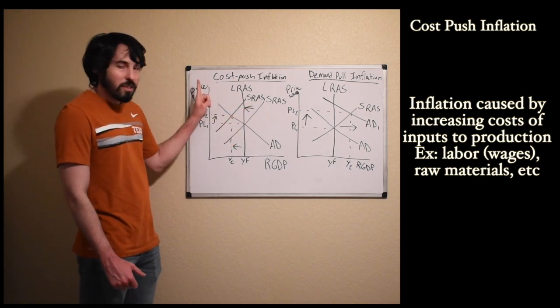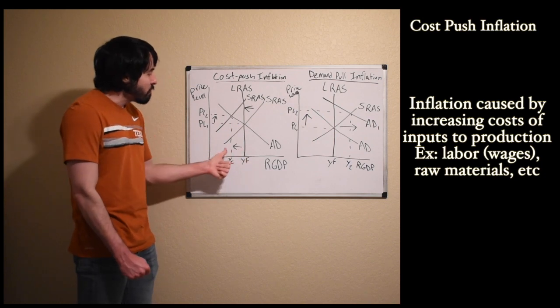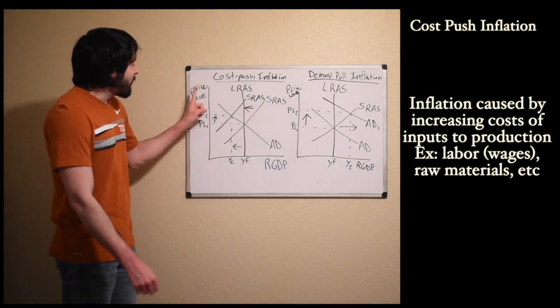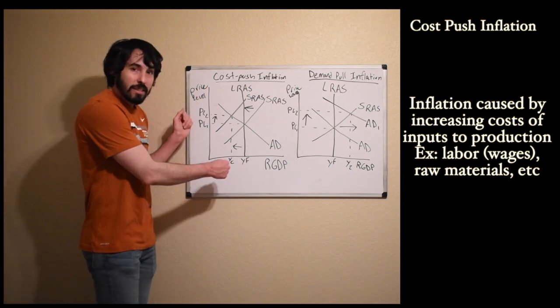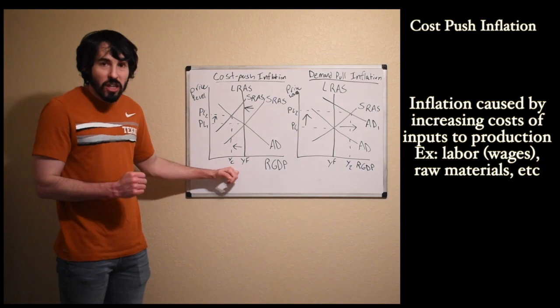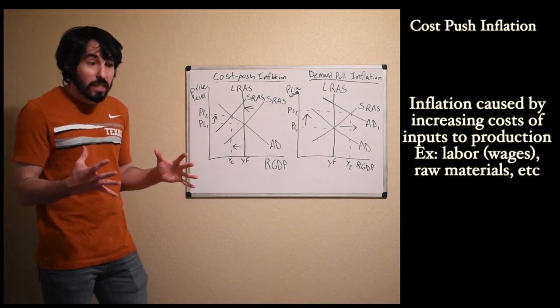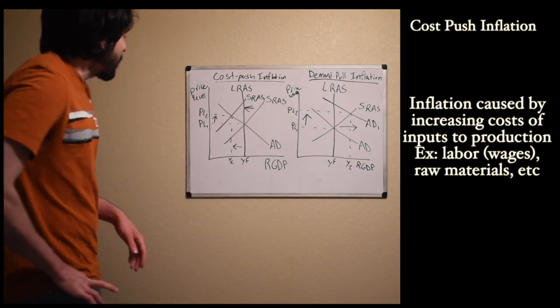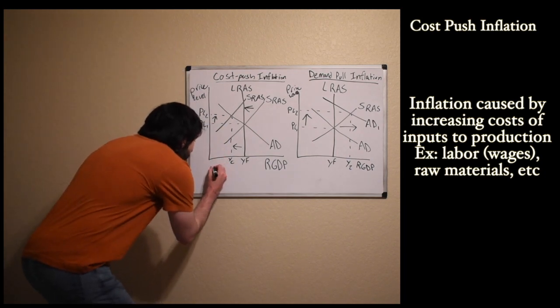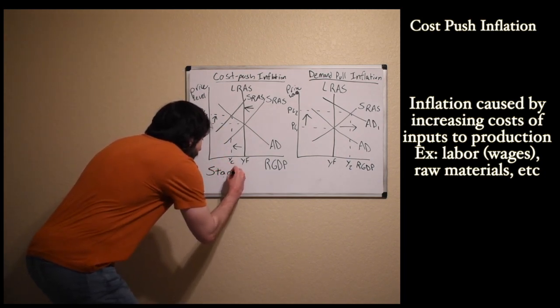Price level increases, we have high inflation. Real GDP decreases, so we have really high unemployment too. We have unemployment and inflation going up at the same time, so it's bad. People have lost their jobs and everything costs more. It's really bad for people. Something else to keep in mind: this has a second name and its name is stagflation.